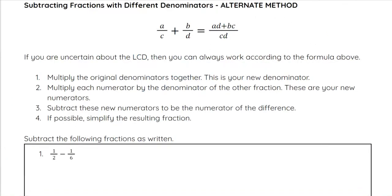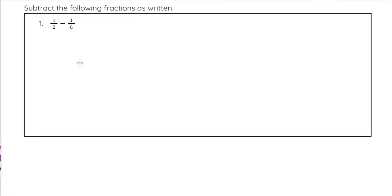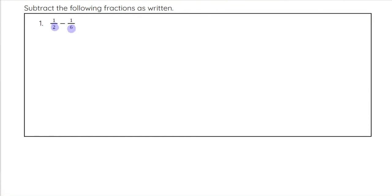As a quick reminder of the alternate method: if you're uncertain about finding the LCD, you can simply multiply the two denominators together to get a new common denominator. It may not be the least common denominator, but it still works. So let's look at one half minus one sixth using this alternate method: we multiply 2 times 6 to get 12 as our new denominator.